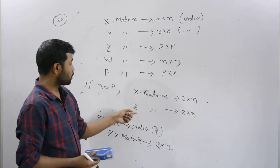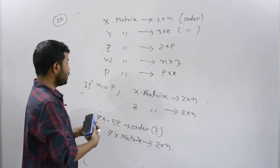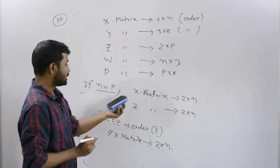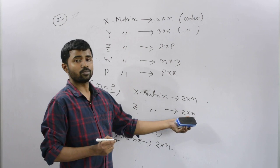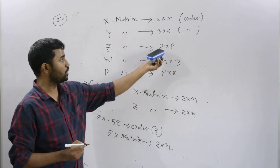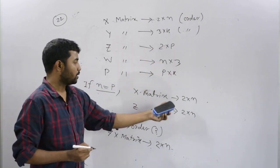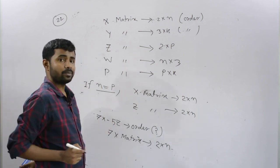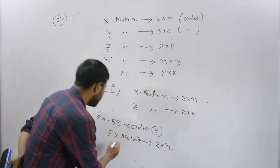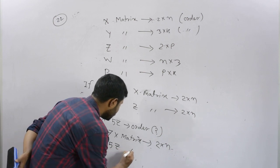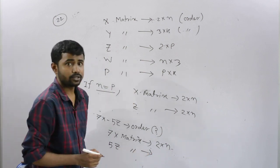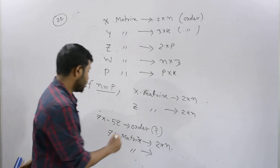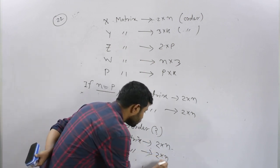When n equals p, the condition is applied. The Z matrix has order n into p, and since n equals p, it becomes 2 into p, which is 2 into n. The scalar 5 multiplied by Z gives the same order. The matrix order remains 2 into n.